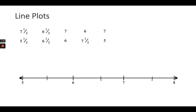Sometimes when we're given data, it helps to organize it as we record it on a line plot. Looking at this set of data and this number line, I can see there is a five, so I'll put one X above the five on my number line. That means I only have one five in my data set.